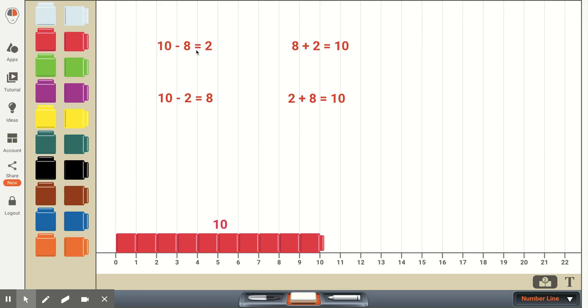From the three numbers, we can create two addition equations and two subtraction equations. So we have the related equations of 10 minus 8 equals 2, 8 plus 2 equals 10, 10 minus 2 equals 8, and 2 plus 8 equals 10.